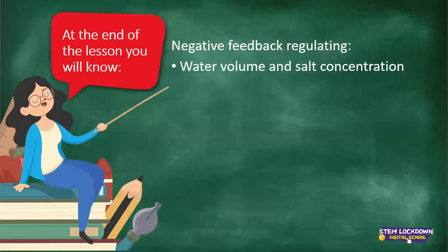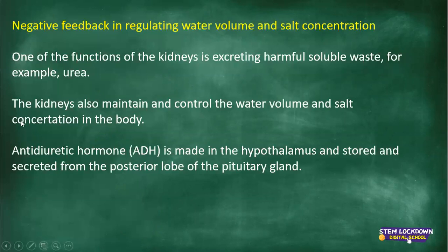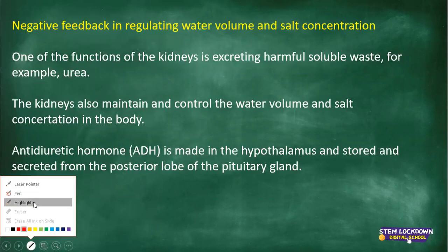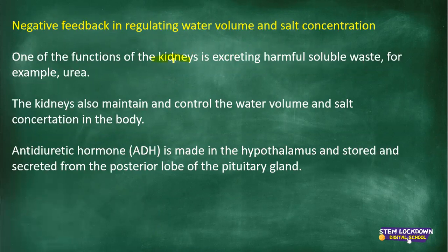Remember, we started with negative feedback last week. Today we are doing the one focusing on water volume and salt concentration. Which organ is mainly involved here? It is the kidneys. One of the functions of the kidneys is excreting harmful soluble waste, for example urea. The kidneys also maintain and control the water volume and salt concentration in the body. This type of negative feedback is regulated mainly in the kidneys.